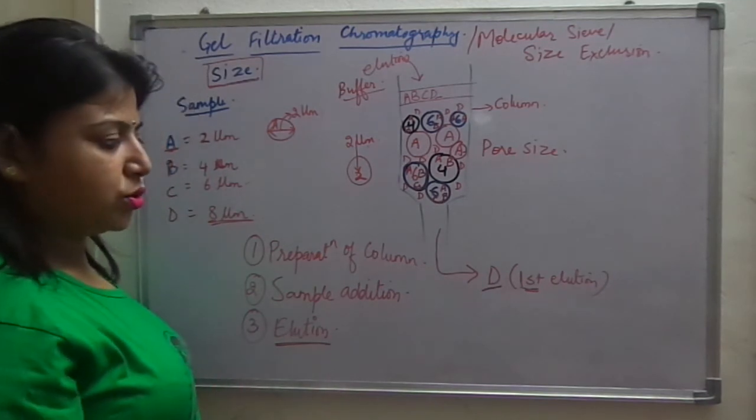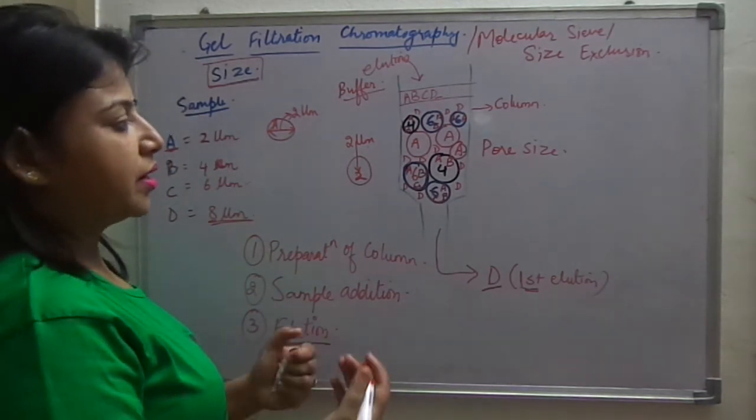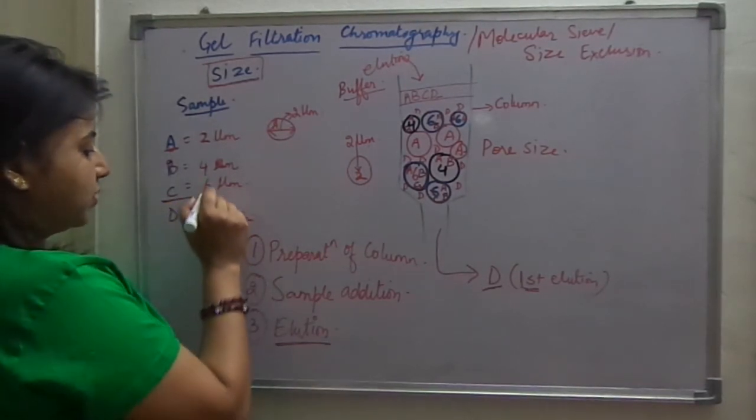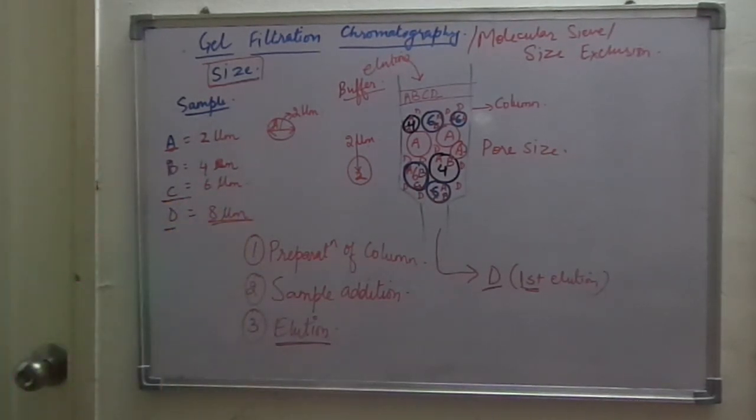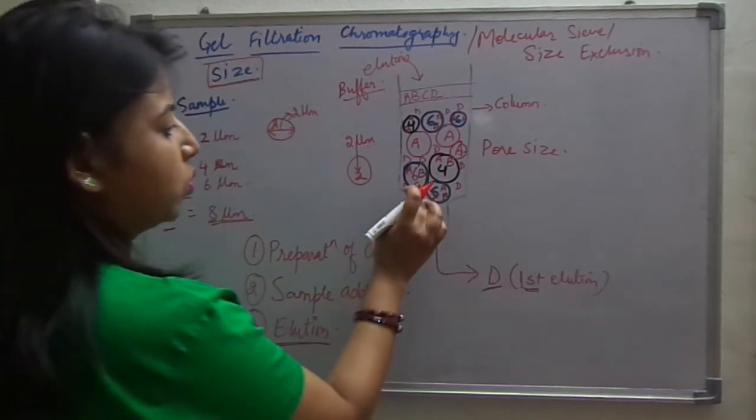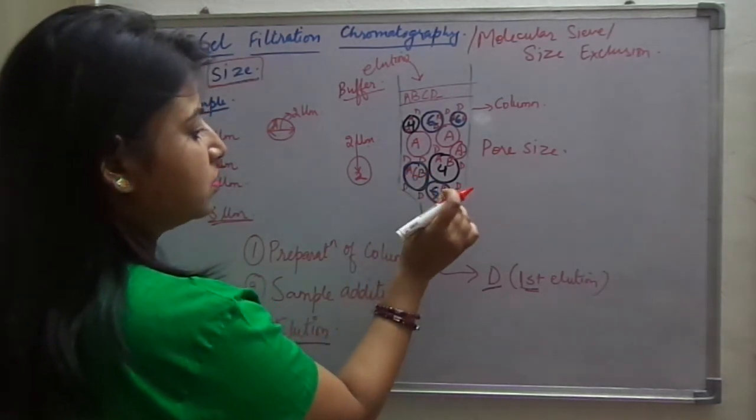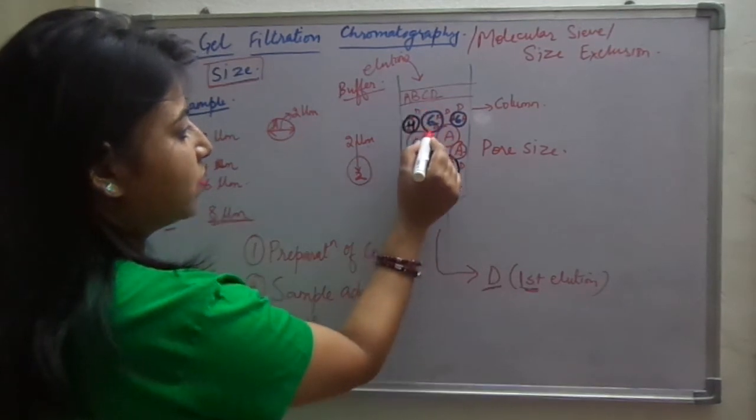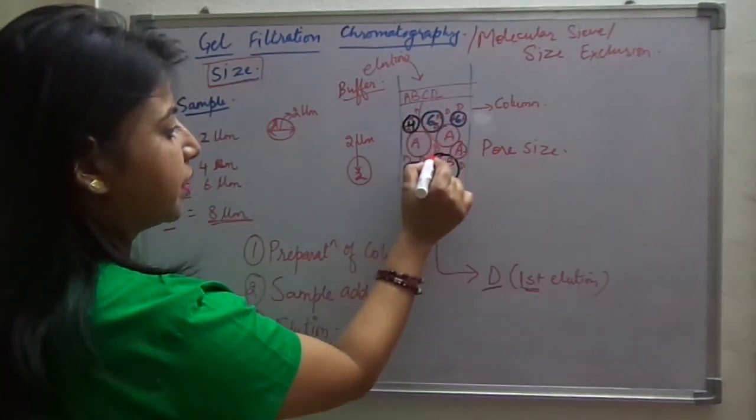So, it has the first elution. Coming to second elution, please note that C which is of next size to D, six micrometre will come out. This C, this C component which I am deleting from here, C will travel through the intercellular spaces from this side, this side, can come over here.